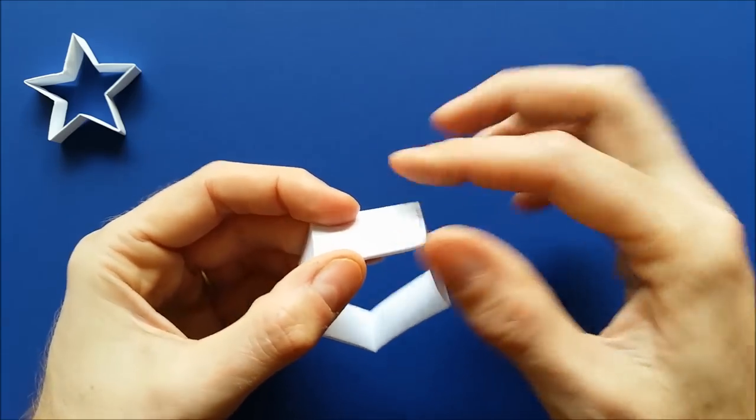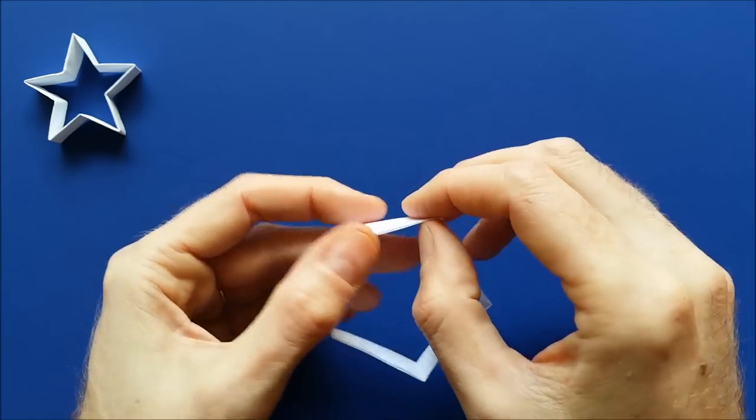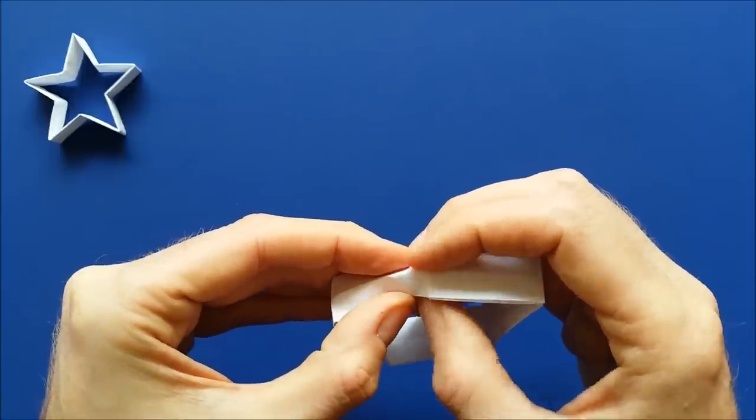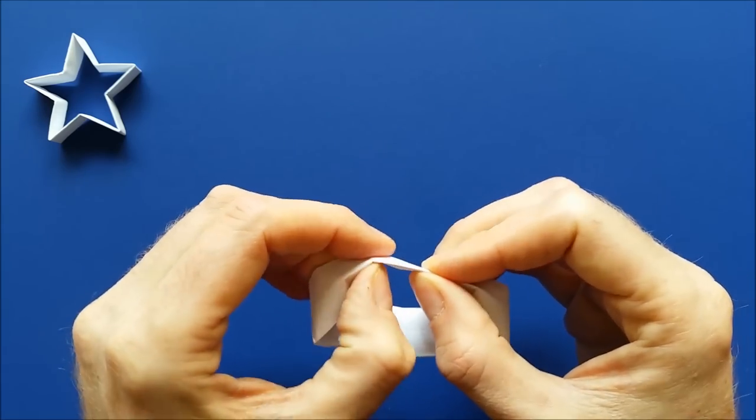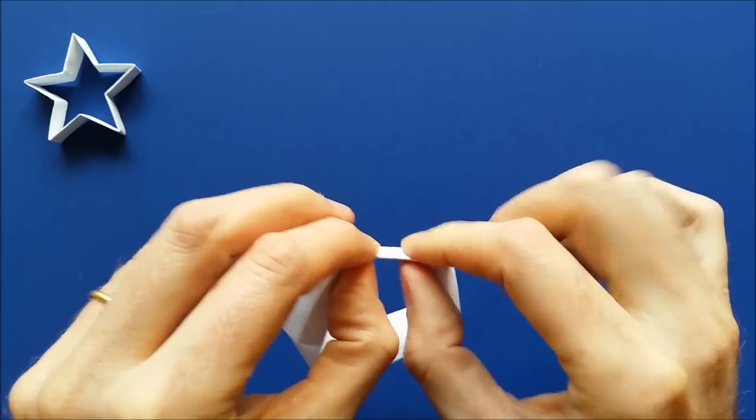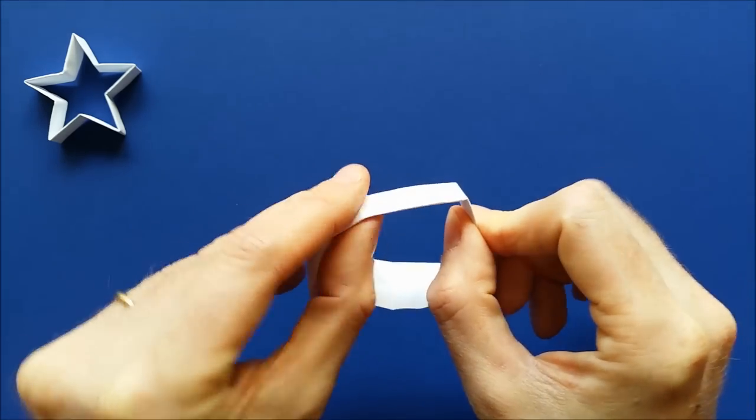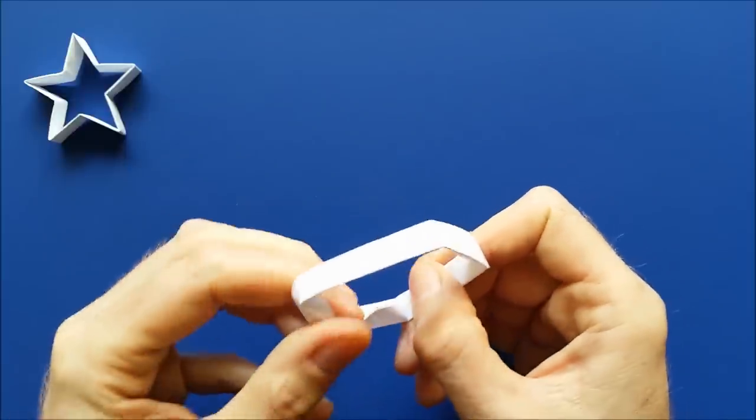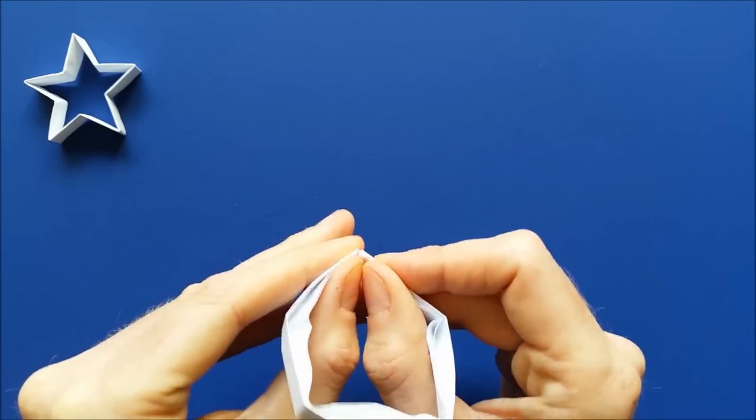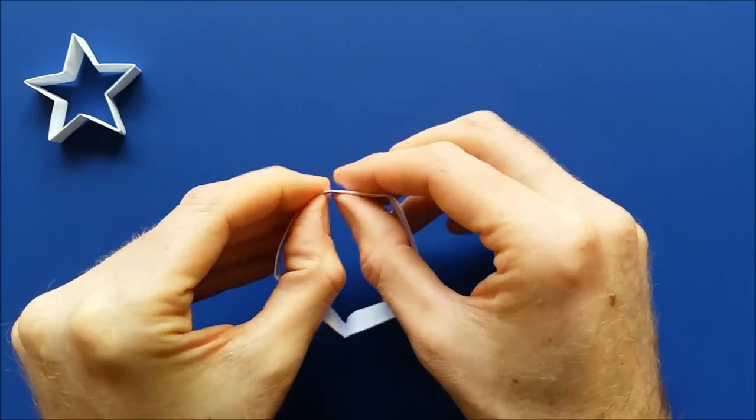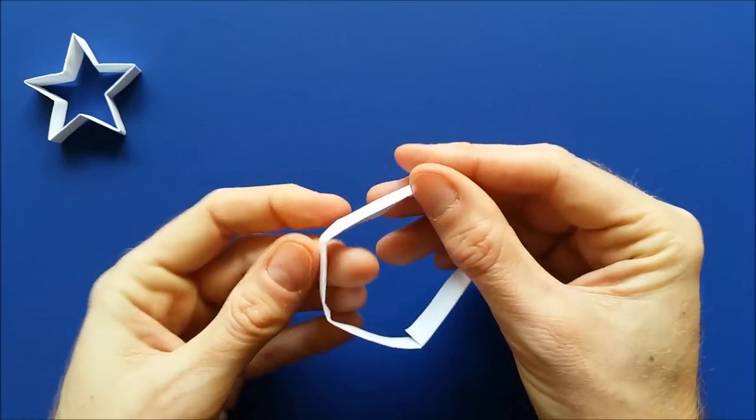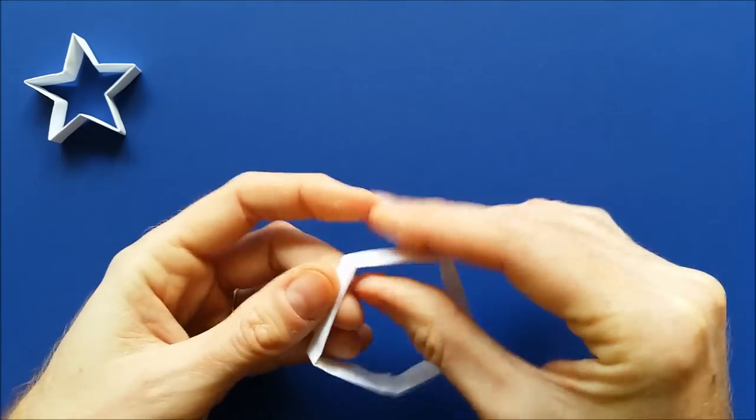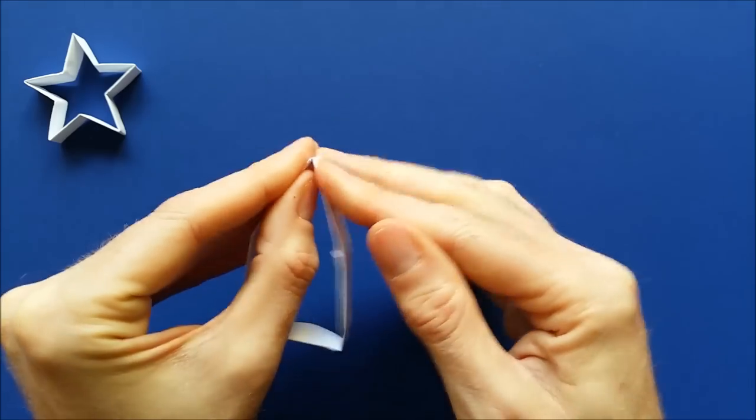Now we are going to fold again the fold that we made here. So start with the part where you have the two sides here. And fold in two by following the fold that we made earlier. Try to hold it here. And then go all around. And once you have done that, you can make it nicer in the inside. And fold again those folds.